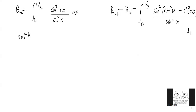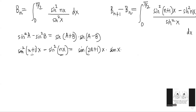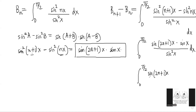We use the standard trigonometric identity: sin²A minus sin²B = sin(A+B)·sin(A−B). So sin²((n+1)x) minus sin²(nx) becomes sin(2n+1)x · sin(x). The integral then becomes 0 to π/2 of sin(2n+1)x · sin(x) divided by sin²(x) dx, and the sin x in the numerator cancels with one factor in sin²(x), giving us 0 to π/2 of sin(2n+1)x divided by sin x dx.